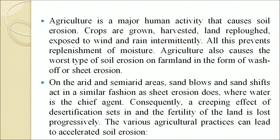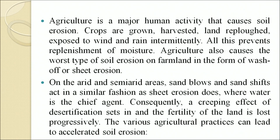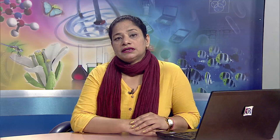Agriculture also causes the worst type of soil erosion on plain land in the form of wash-off or sheet erosion. On arid and semi-arid areas, sand blows and sand shifts act similarly to sheet erosion. When water is the chief agent, a creeping effect of desertification sets in and the fertility of the land is lost progressively. Plowing or tilling is the process of loosening and turning soil using a plow; it disrupts the natural soil surface and protective vegetation, increasing the chances of erosion. Continuous cropping of the same land and extended cultivation of marginal and sub-marginal land increases soil erosion. Cultivation on mountain slopes without appropriate land treatment measures such as bunding, terracing and trenching causes soil erosion and loss of soil nutrients.